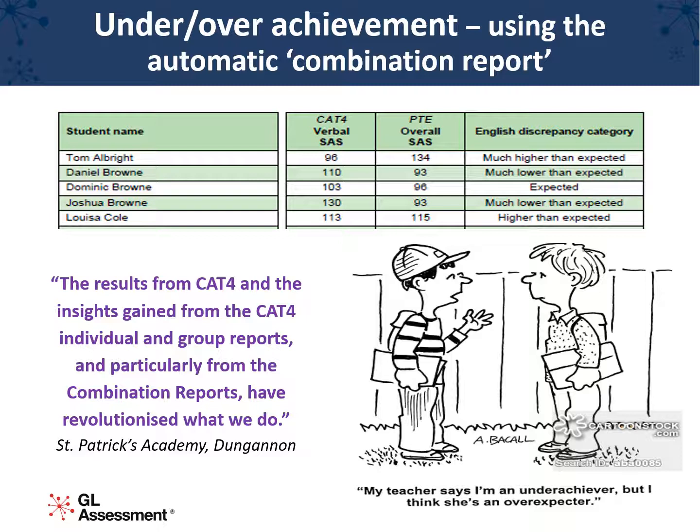We know that you have enough on your plate without expecting you to do this comparison yourselves, so we've designed an automatically produced combination report that does this for you. Have a look at Daniel Brown, who has an ability score of 110 but a lower attainment score of 93. The data has identified a discrepancy and is asking the question: why is there this discrepancy? The next step is for the teacher to apply everything else they know about that student to find the answer — is he coasting? What's his homework like? What's his attitude like?